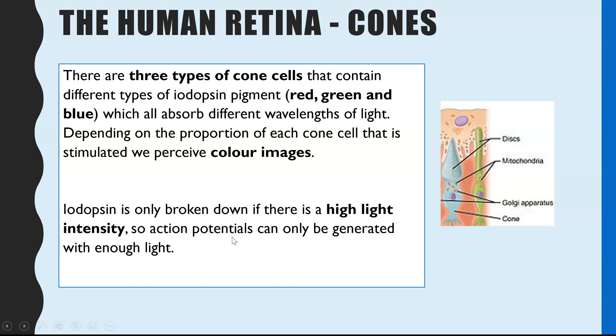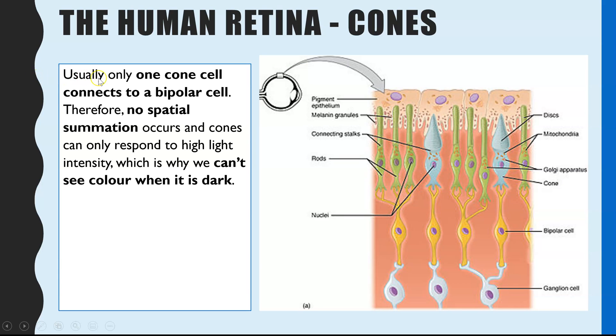So iodopsin is only broken down if there is a high light intensity, which is why you don't see colors when it's very dark, because there's not enough light energy to break down the iodopsin and trigger an action potential. Just only when it's quite bright, you can see colors. Now this is partly because iodopsin does require more energy, more light energy to break down the pigment. But the second reason is there is no retinal convergence and therefore there's no spatial summation. So you only have one cone cell connected to one bipolar cell. So that is the reason why you don't see colors in the dark.